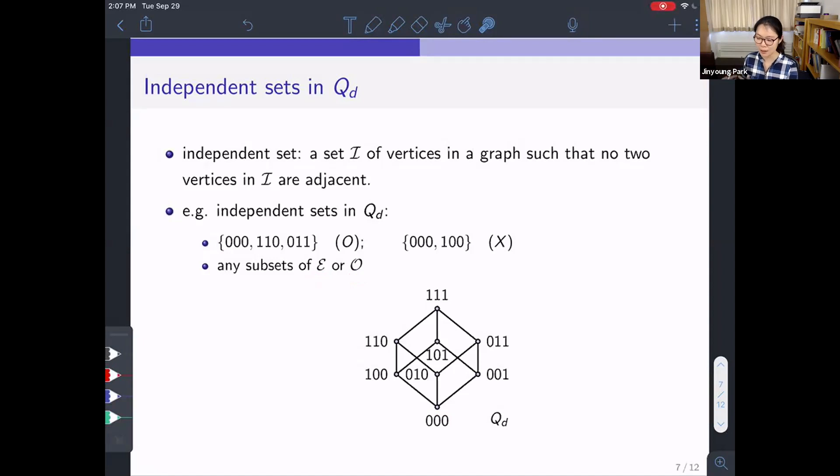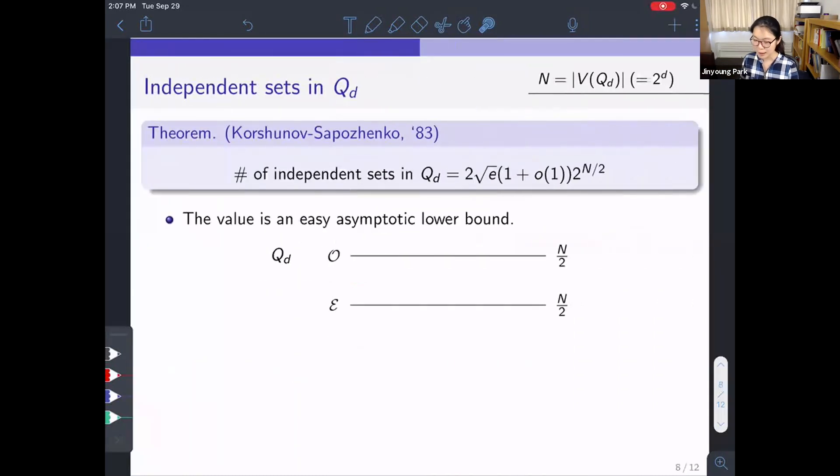When we look at this, the notion of an independent set in a graph is quite similar to the notion of an antichain in a poset. People were interested in counting independent sets in Q_d. And what's known is, in 1983, Korshinov and Sapozhenko found the asymptotics for this quantity. They showed that the number of independent sets in Q_d is asymptotically 2 times the square root of e times 2^(n/2). And what's interesting here is that we have these Euler numbers e in this counting problem. But unfortunately, I don't have time to talk about this. But let me point out this one thing.